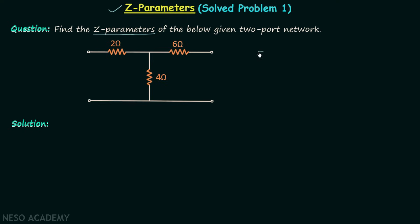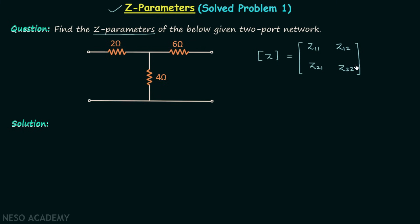We need to find the Z parameter matrix, which is a two by two matrix having the elements Z11, Z12, Z21, and Z22. So we need to find the four elements of the Z parameter matrix, and there are two steps required to calculate the Z parameters.